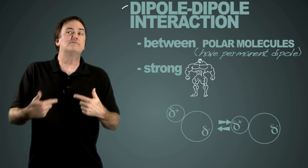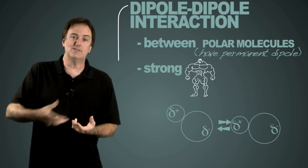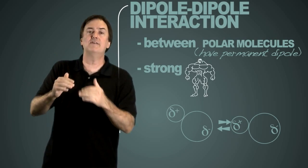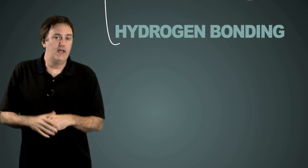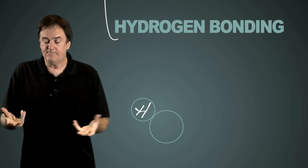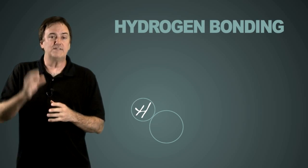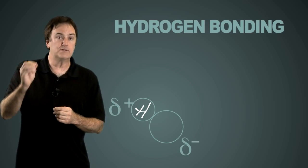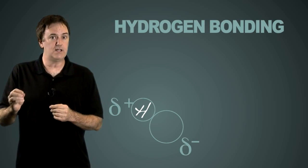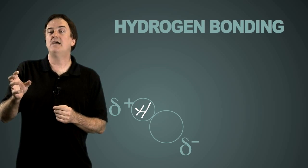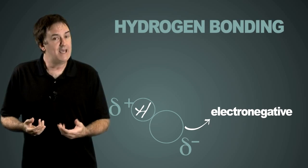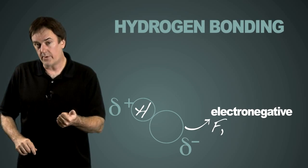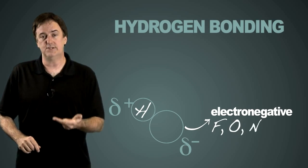Now, we have a subset of that that's actually the strongest version of that. They're even stronger than a regular dipole-dipole, and we call it hydrogen bonding. It's really because it involves hydrogen being the partial positive part of this molecule. Anytime hydrogen is covalently bound to a very electronegative element—and I'll be specific here—it has to be bound to fluorine, oxygen, or nitrogen.